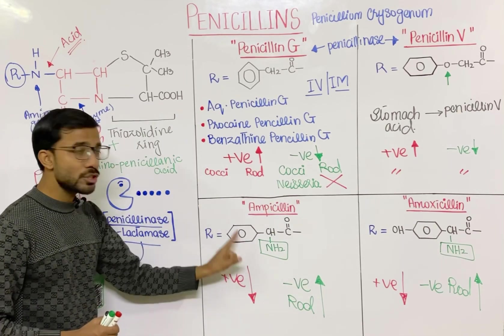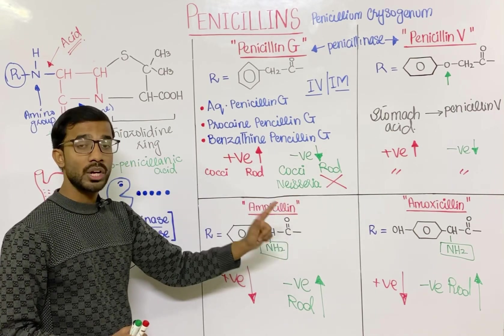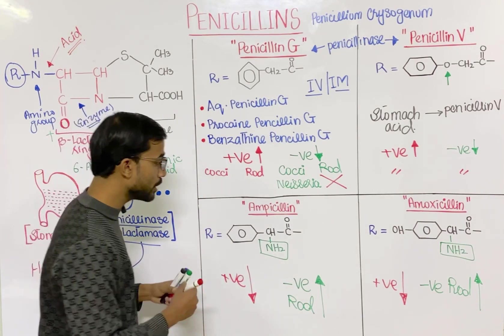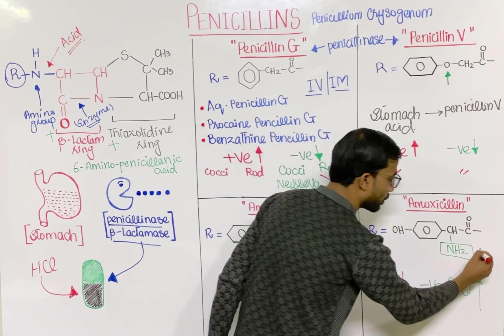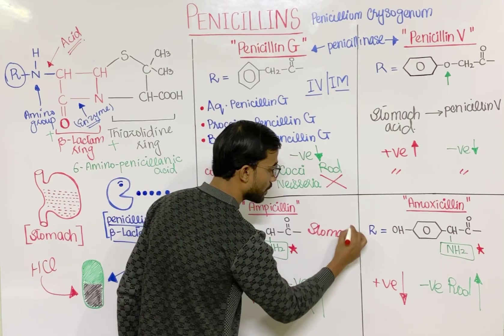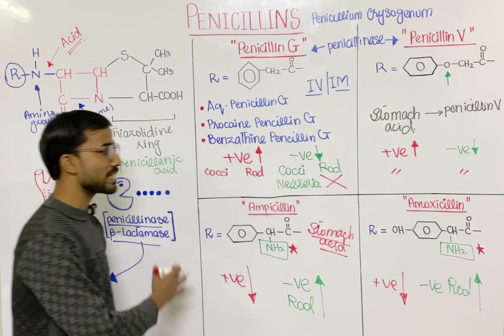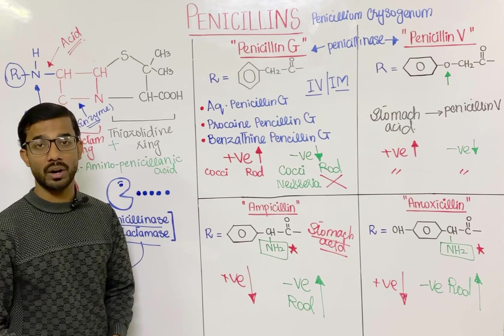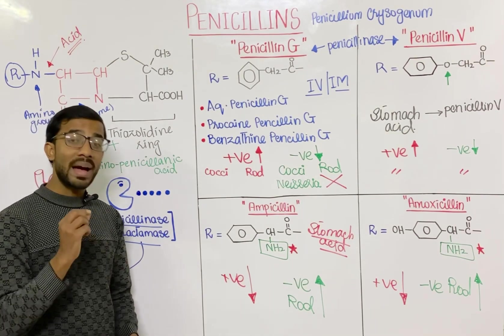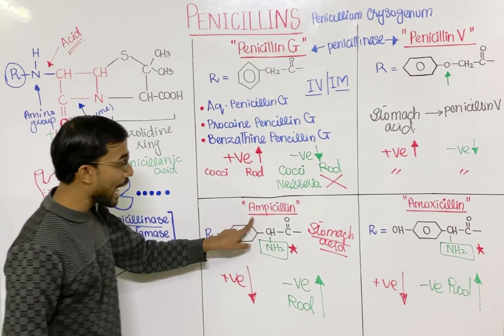An important point: these two drugs — ampicillin and amoxicillin — are not destroyed by stomach acid, due to the presence of the NH2 group in both of them. Stomach acid has little effect or almost no effect on ampicillin and amoxicillin, so you can take these drugs via the oral route. However, penicillinase or beta-lactamase enzyme still has an effect on ampicillin and amoxicillin.